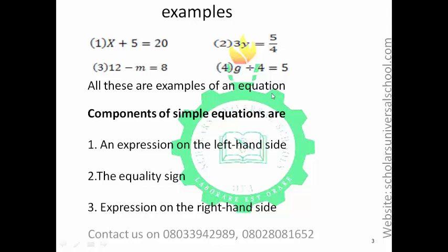What are the components of a simple equation? From the examples given, you will see that we have the left-hand side expression and the right-hand side expression. There is also something that links them together — the equality sign. So the expression on the left-hand side, the expression on the right-hand side, and the equality sign are all components of a simple equation.